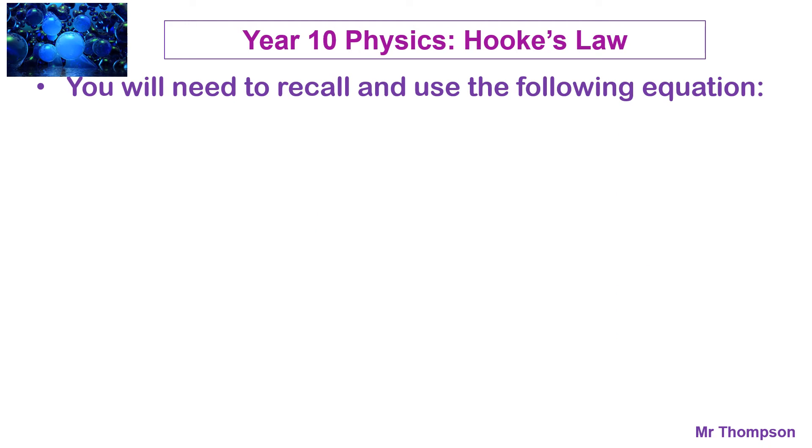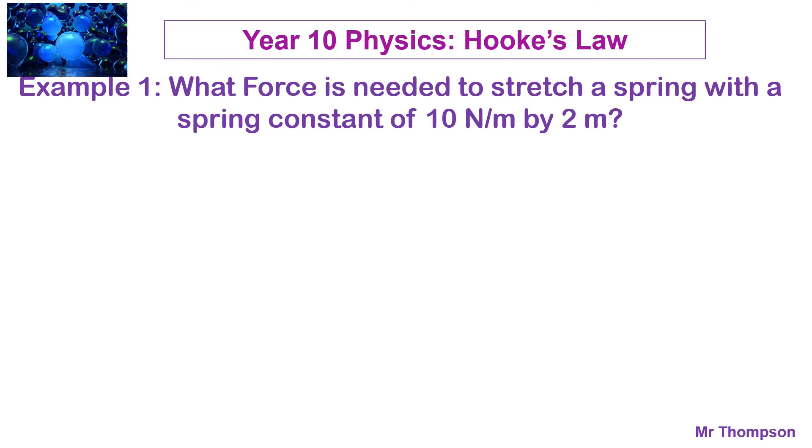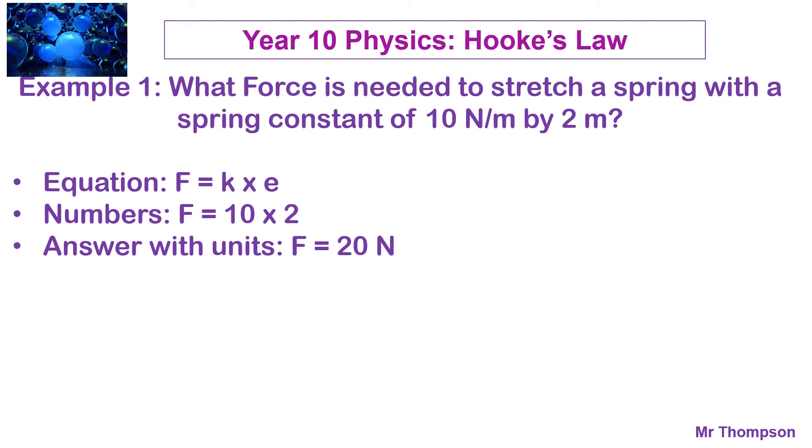You need to be able to recall and use the equation that goes with it. So, force is equal to spring constant times the extension. And it's given these symbols here. You do need to recall this one. So, rearranging it, you would get K is F over E, and also E is F divided by K for those high-level questions. So, let's have a look at some examples. What forces need to stretch a spring with a spring constant of 10 N per meter by 2 meters? Well, you just use the equation. Quite simple. This one, put the numbers in the equation, and you would need a force of 20 N. Hopefully, that makes sense. 10 N for every meter, so you'd need 20 N to stretch 2 meters.